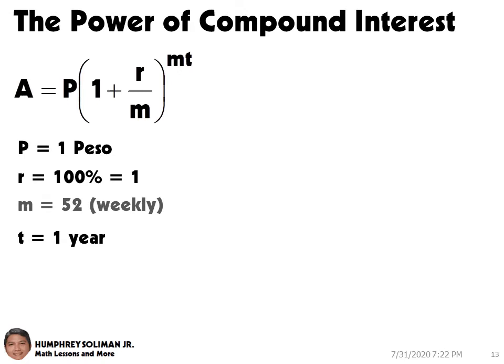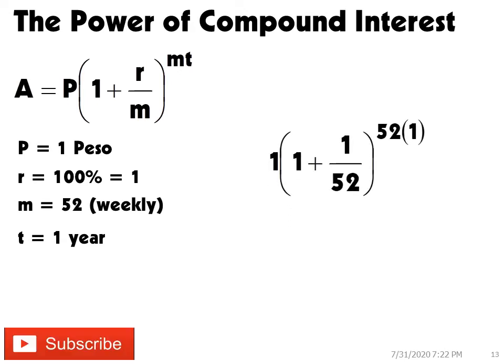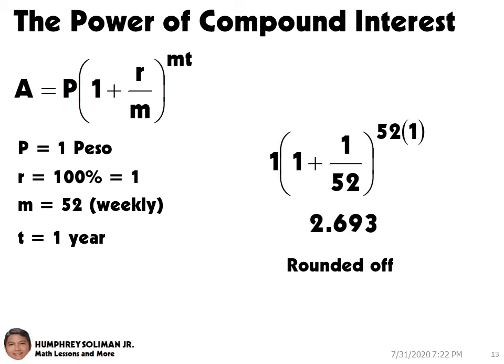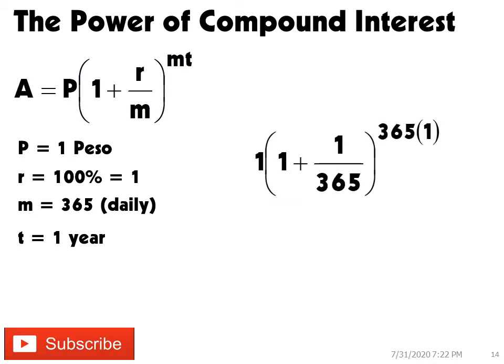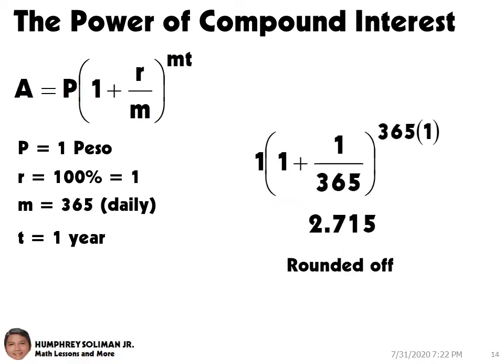If the bank offered compounding the interest weekly, the M will be equal to 52, you will have 2.693. If the bank offered compounding the interest daily, the M will be equal to 365, you will have 2.715.